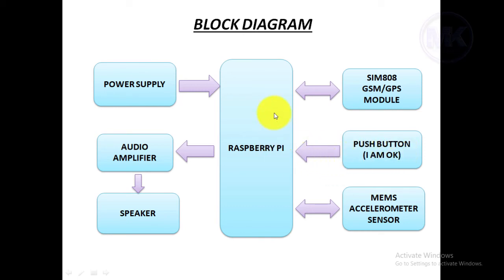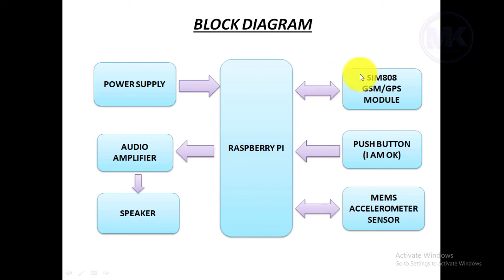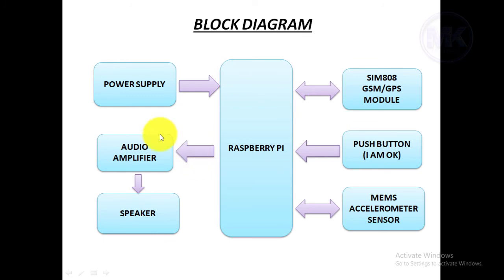If the accident is major and the driver is not able to press the button, then immediately the Raspberry Pi sends commands to the SIM808 module to send an SMS with the location data. There is also one speaker attached to the Raspberry Pi along with an audio amplifier, whose purpose is to speak out what is happening in the system.